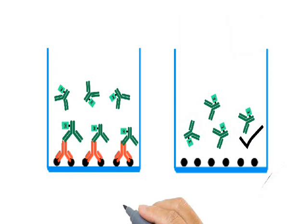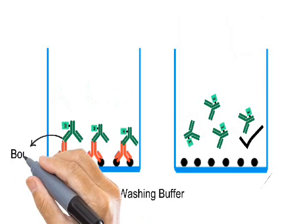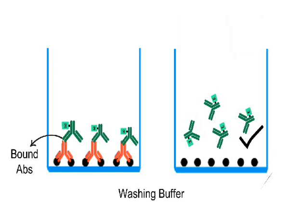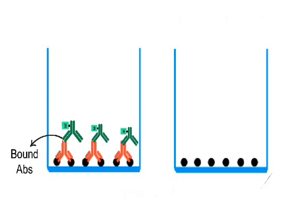In the next step, the wells are again washed with the help of washing buffer. In the first case, the antibodies are bound, so they will not be removed by washing. In the second case, the enzyme-linked antibodies are unbound, so they will be removed from the well.